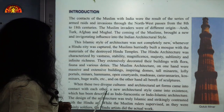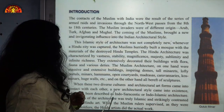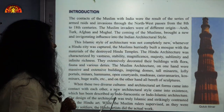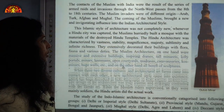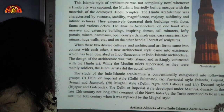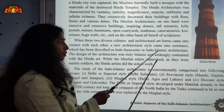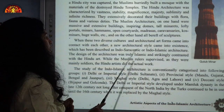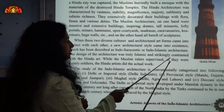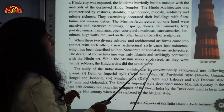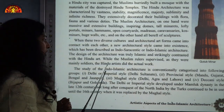When these two diverse cultures and architectural art forms came into contact with each other — India and Islamic — a new architectural style came into existence, described as Indo-Saracenic or Indo-Islamic. The design of the architecture was truly Islamic and strikingly contrasted with Hindu art. While the Muslim rulers supervised, as they were mainly soldiers, the Hindu artists did the actual work.